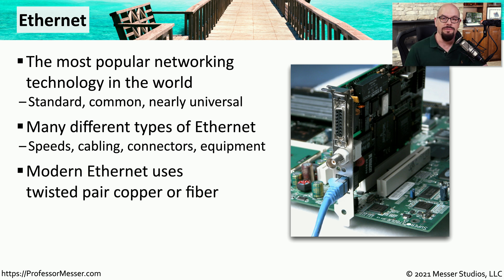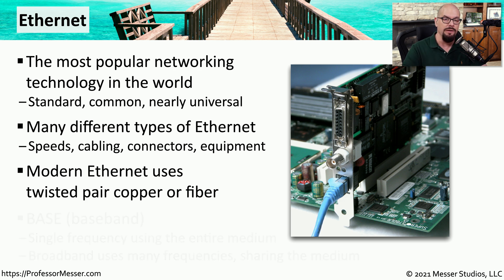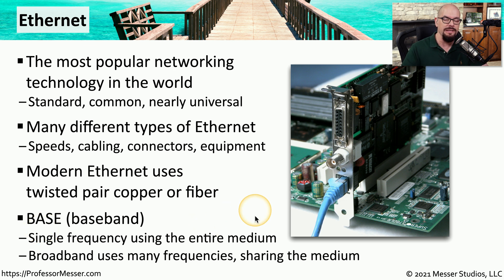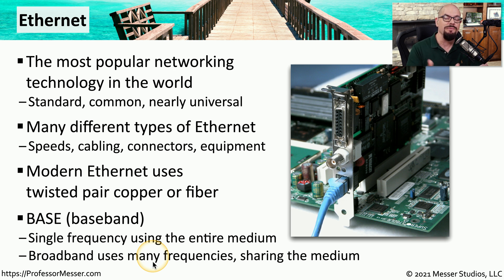These days, our modern Ethernet networks use fiber and twisted pair copper, but you may run into other types of connectors as well. One common technology used across many of these different Ethernet standards is baseband technology, which means there is a single frequency using the entire medium. This is different than a broadband connection, where you have a single wire but send many different frequencies across it, effectively sharing the medium for multiple communications channels.